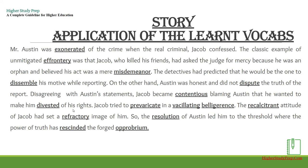Mr. Austin was exonerated of the crime when the real criminal, Jacob, confessed. The classic example of unmitigated effrontery was that Jacob, who killed his friends, had asked the judge for mercy because he was an orphan and believed his act was a mere misdemeanor. The detectives had predicted that he would be the one to dissemble his motive, while Austin was honest and did not dispute the truth of the report.